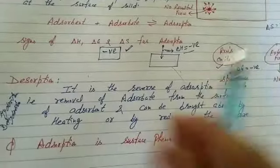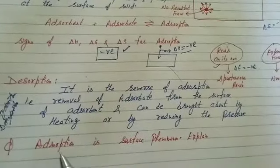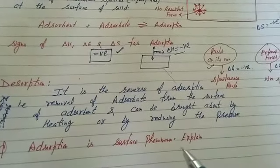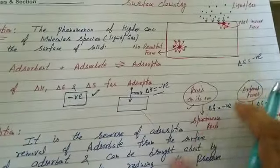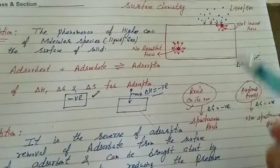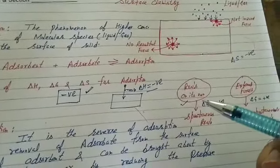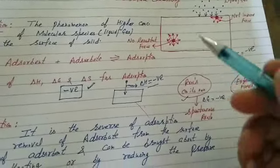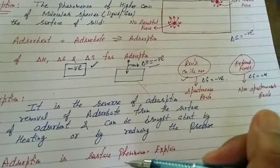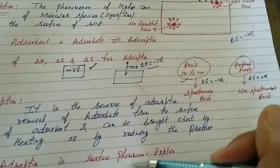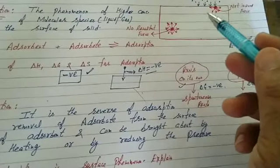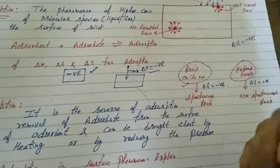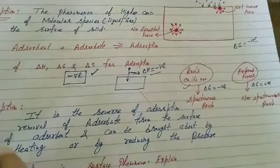Next is an important question: adsorption is a surface phenomenon — explain. Adsorption is a surface phenomenon because there is a higher concentration of molecular species at the surface. So it is called a surface phenomenon.